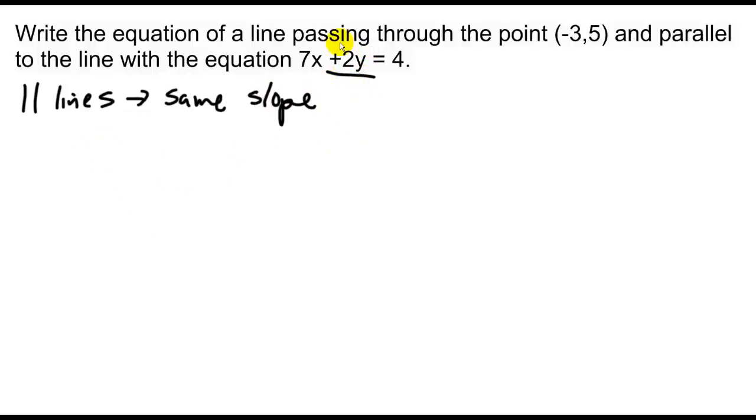All right so the first thing I'm going to need to do is find the slope of this line. Thus getting the slope intercept equation form. I have 2y equals negative 7x plus 4. Divide by 2 so y equals negative 7 halves x plus 2. The only thing that's really important here is that slope. I know m equals negative 7 over 2. So therefore the parallel slope is negative 7 over 2.